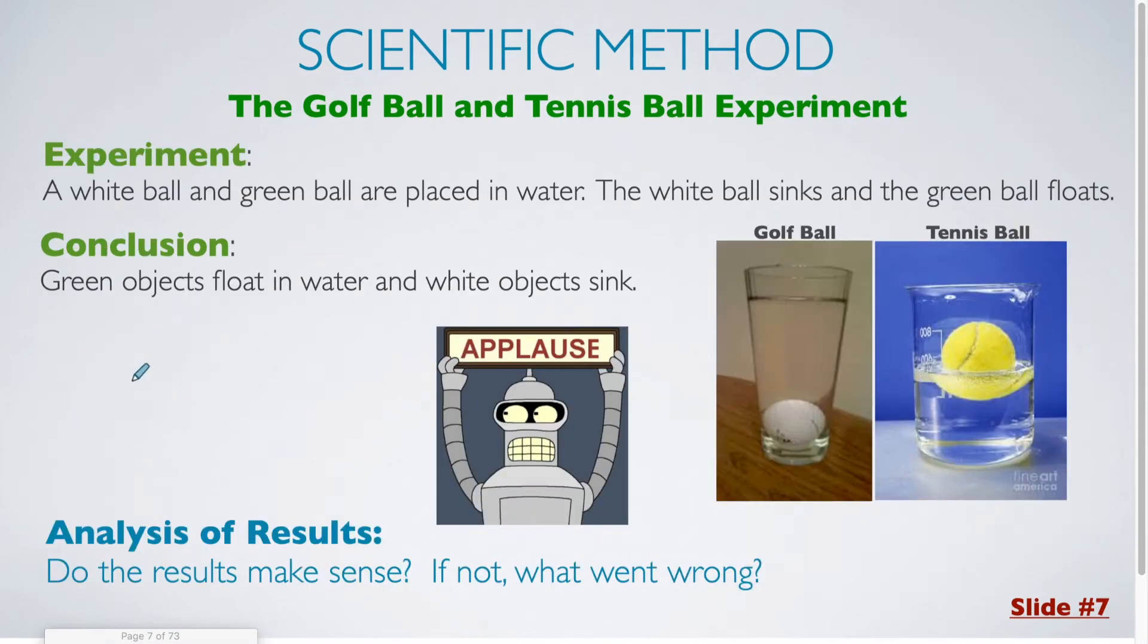For my experiment, I place both the white golf ball and the green tennis ball in water. I see that the white ball sinks to the bottom and the green ball floats. Therefore, I draw a conclusion, which is that green objects will float in water and white objects will sink.